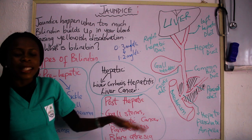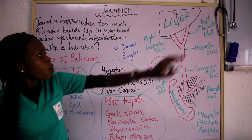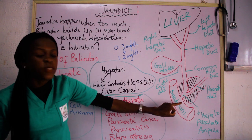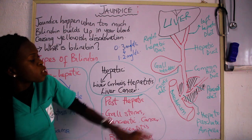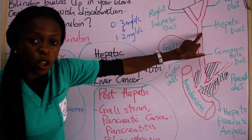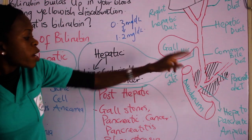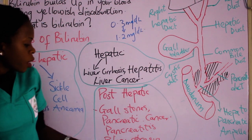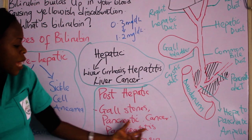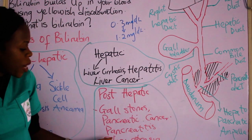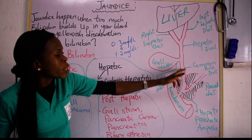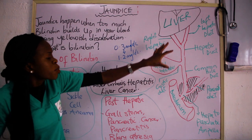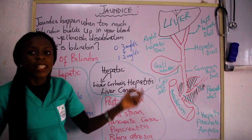The third type is post-hepatic jaundice, meaning the problem is after the liver. After the liver, we have the hepatic ducts, cystic ducts, common bile ducts, and pancreatic ducts before the bile finally reaches the duodenum. If something obstructs this flow — for example, gallstones obstructing the flow of bile, pancreatic cancer, pancreatitis, or biliary atresia where the biliary tract is narrowed or absent — it can result in post-hepatic jaundice.